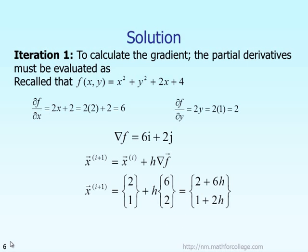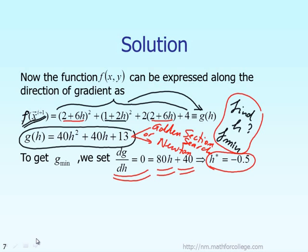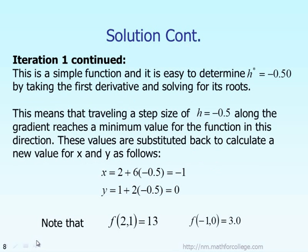After you figure out the step size H, you substitute back. You substitute the value of the step size H, which is negative 0.5 you just found. Then you find out the new value of X at iteration I plus 1 and the new value of Y at iteration I plus 1. They are equal to minus 1 and 0 respectively.